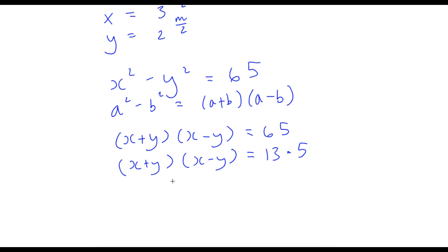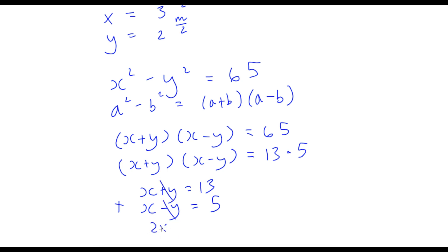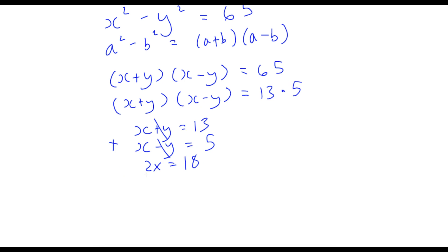This gives us two equations: x plus y equals 13, and x minus y equals 5. This is essentially a system of equations. If we add these two equations together, we cancel out y and get 2x equal to 13 plus 5, which is 18. Dividing both sides by 2, we get x equal to 9.